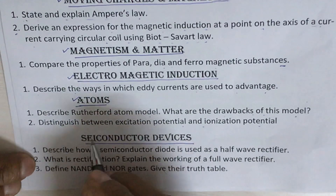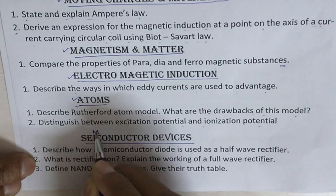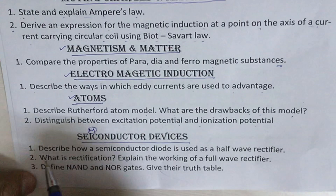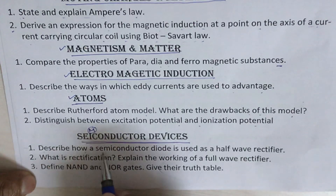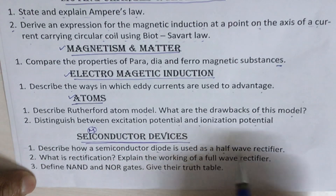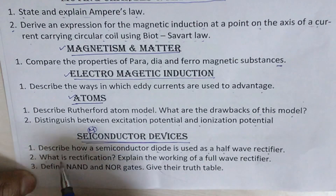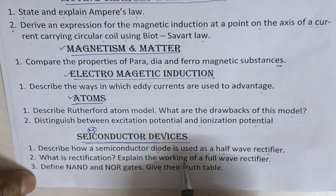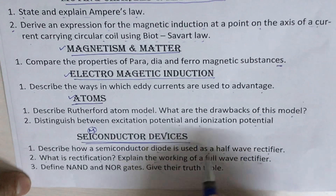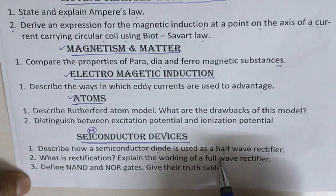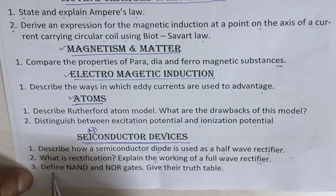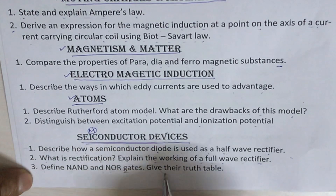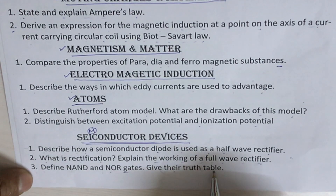The next topic is Semiconductor Devices. The questions are: first question, describe how a semiconductor diode is used as a half wave rectifier. Second question, what is rectification? Explain the working of a full wave rectifier. This question may also be asked as: distinguish between half wave and full wave rectifier — that is, the differences between half wave and full wave rectifiers. The last question from the same chapter: define NAND and NOR gates and give the truth table of both NAND and NOR gates.